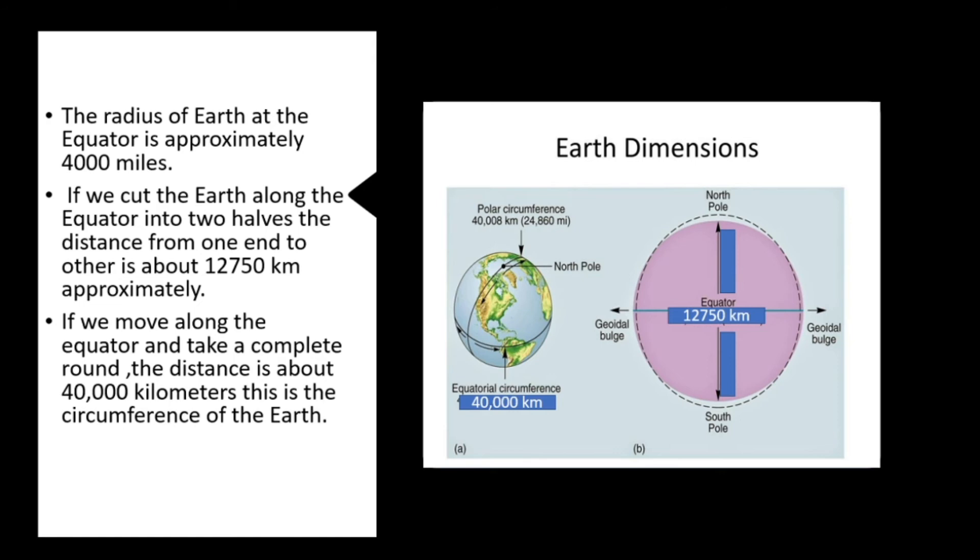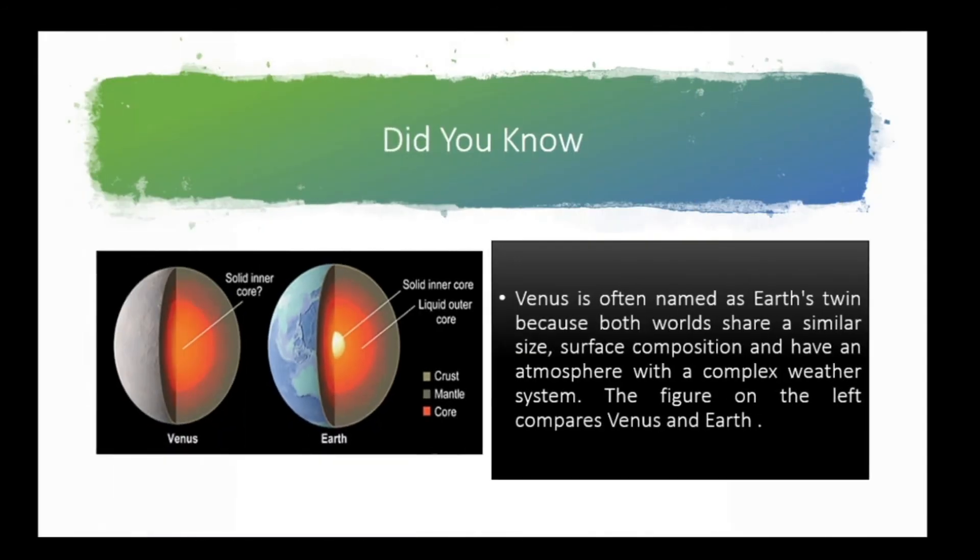So students, did you know that Venus is often named as Earth's twin because both worlds share a similar size, surface composition, and have an atmosphere with a complex weather system? The figure on the left compares Venus and Earth.